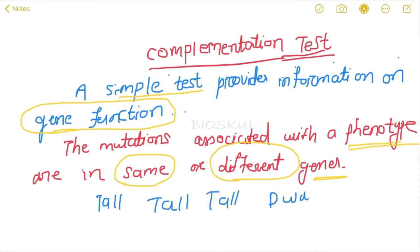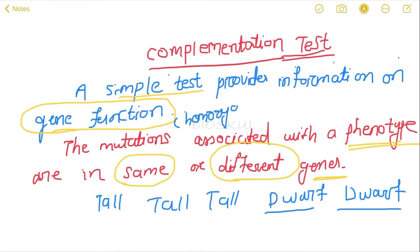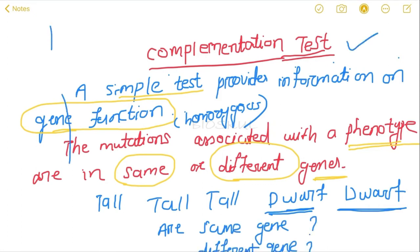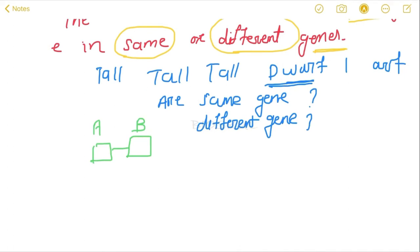Let's consider there are tall plants and dwarf or short plants. The dwarf phenotype is because of some homozygous mutations. Now, we have gene A and gene B. Gene A produces a triangular protein and gene B produces a circular protein. When both genes are normal, they complement each other and result in a tall plant.